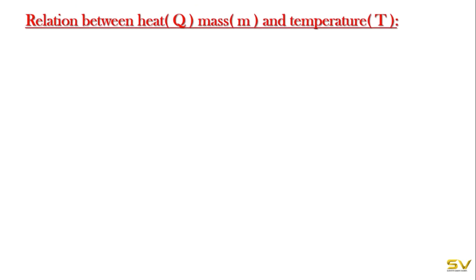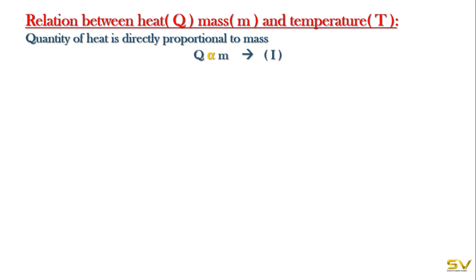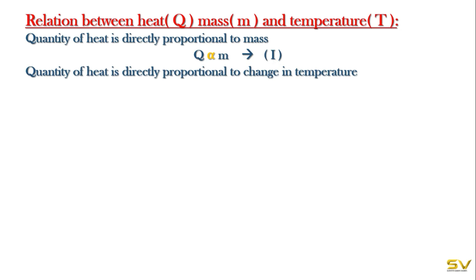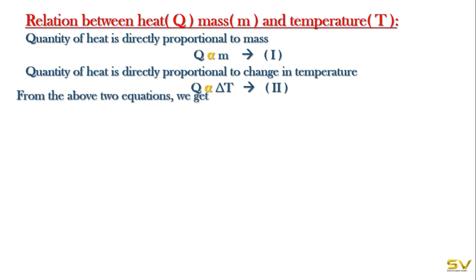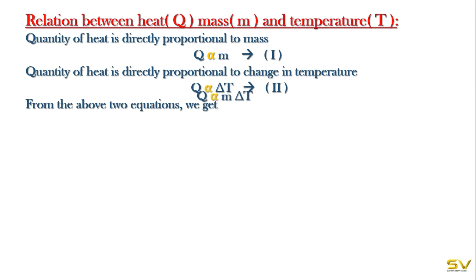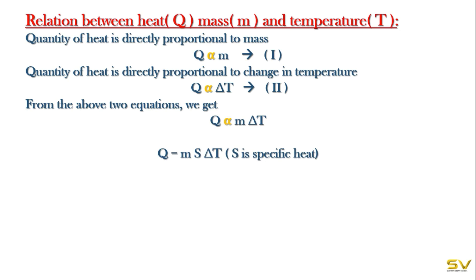Now, the relation between heat, mass, and temperature. The quantity of heat is directly proportional to mass: Q ∝ m. The quantity of heat is also directly proportional to change in temperature: Q ∝ ΔT. Combining these two, Q ∝ mΔT. To remove the proportionality, we introduce a constant s, which is specific heat, giving Q = msΔT.